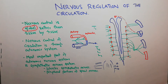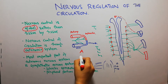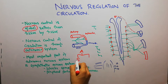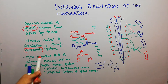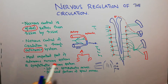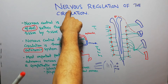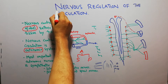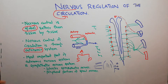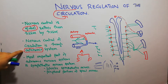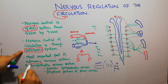Although the somatic system and central system may play some role, mostly the nervous control of circulation is through the autonomic nervous system, which is a motor system. The autonomic nervous system is further divided into sympathetic and parasympathetic. The most important part of the autonomic nervous system in regard to circulation is the sympathetic nervous system.